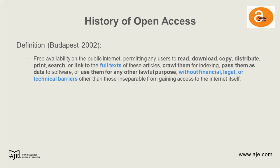So I've got a couple of quotes. The definition of open access is: free availability on the public internet, permitting any user to read, download, copy, distribute, print, search, or link to the full text of articles, crawl them for indexing, pass them as data to software, or use them for any other lawful purpose without financial, legal, or technical barriers other than those inseparable from gaining access to the internet itself.